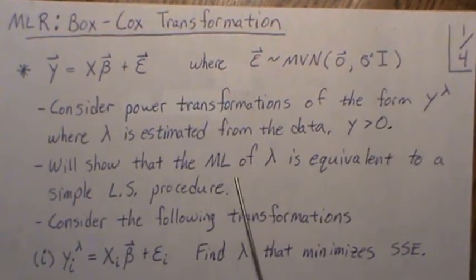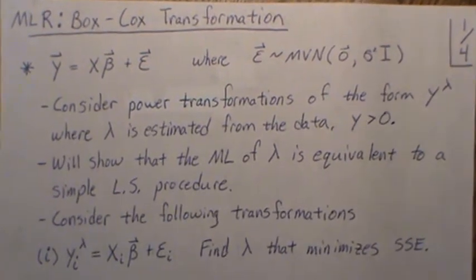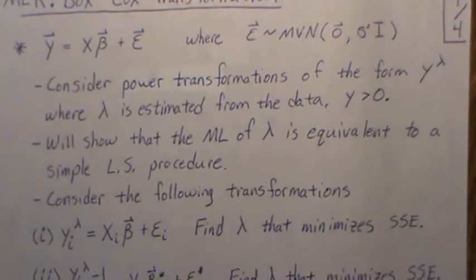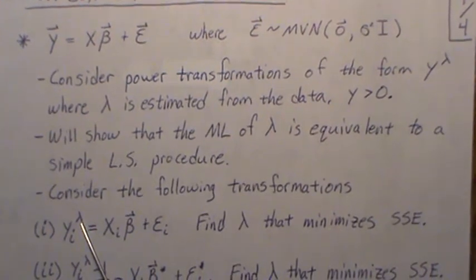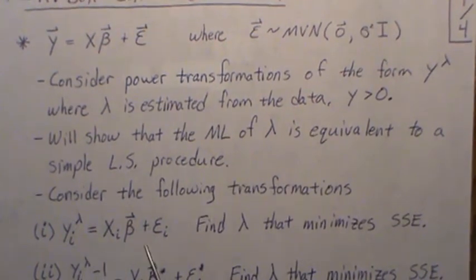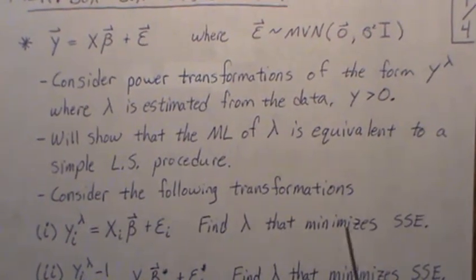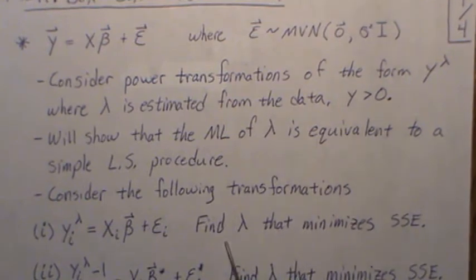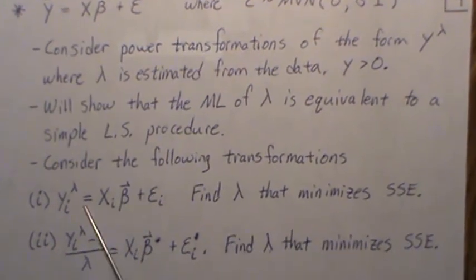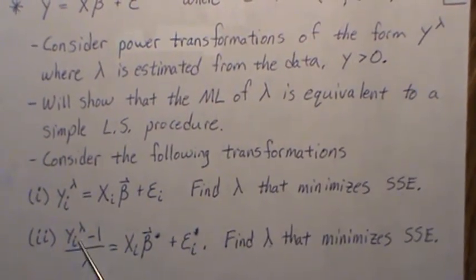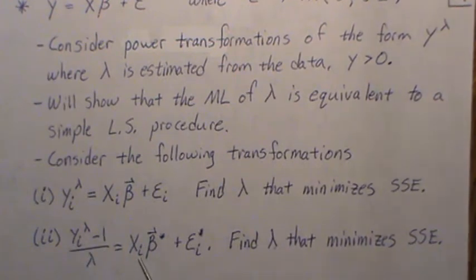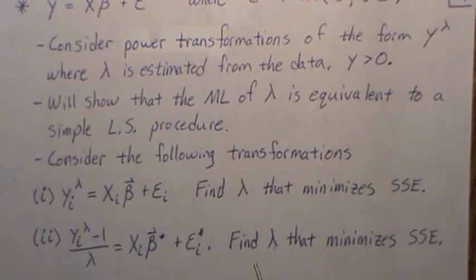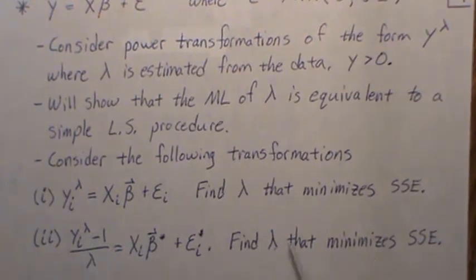We will show that the maximum likelihood estimator of lambda is equivalent to a simple least squares procedure. First let's consider the following models. So y_i raised to the lambda — the Box-Cox transformation — is equal to this. What we do is find the lambda that minimizes this sum of squared error. That's the goal with this model. Now let's look at another model: we subtract one and divide by lambda, which standardizes it, and then we assume it has a linear model like this. We want to find the lambda that minimizes the sum of squared error in this model.